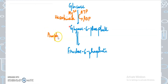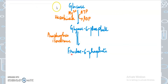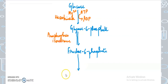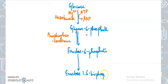In the next step, this 6-carbon phosphorylated sugar is isomerized to form fructose-6-phosphate. Glucose is an aldose sugar containing an aldehyde group, whereas fructose is a ketose sugar containing a ketone group. It is just an isomerization reaction — nothing added, nothing removed — and that is why the enzyme is called phosphoglucoisomerase.